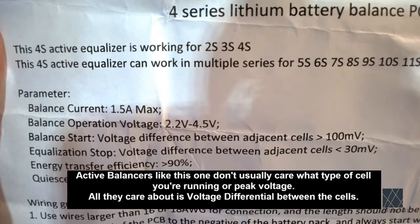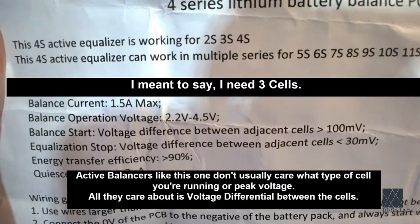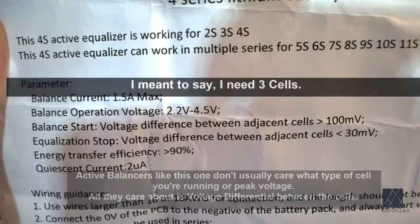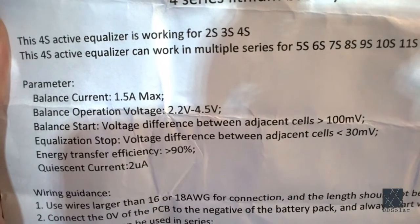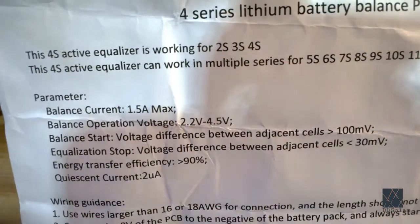This particular balancing board says it can do two, three, or four cells. A 1.5 amp balancing current is actually really impressive. What I don't like is it says the voltage difference between adjacent cells needs to be 100 millivolts.